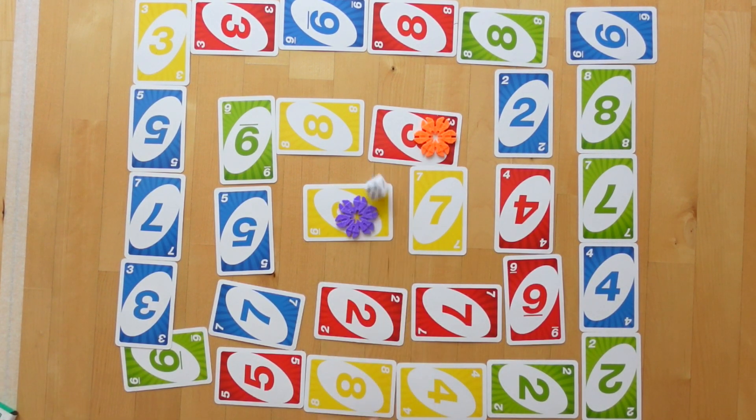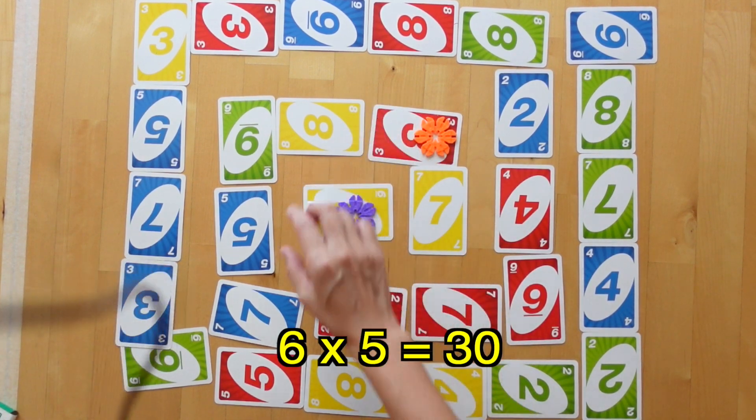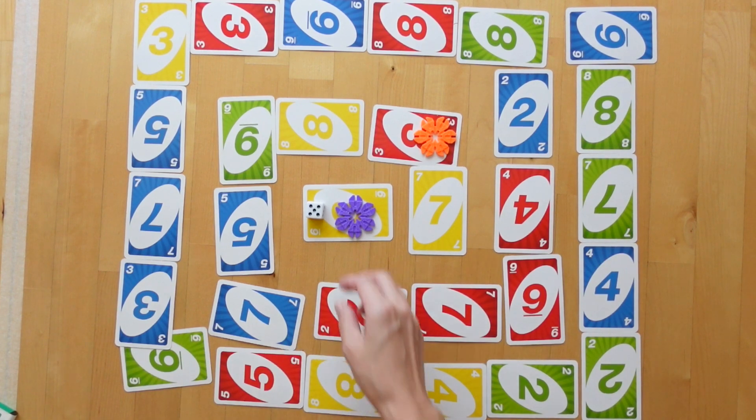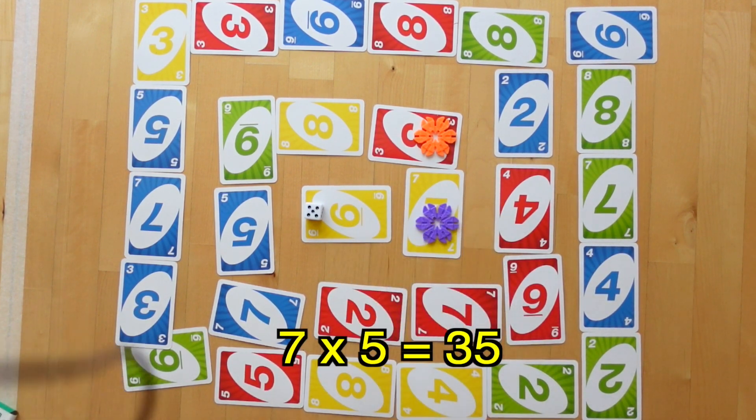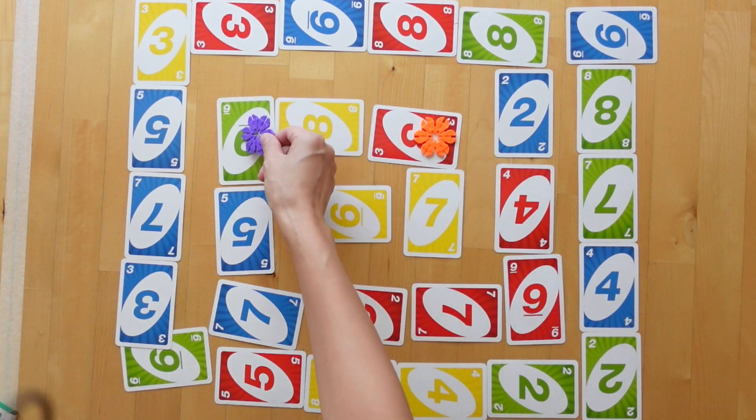Purple player's turn, she rolls a 5. 6 times 5 is 30, in which case she would move 0. Or 7 times 5 is 35, and then she will move 5 spaces, which is what she's going to choose. 1, 2, 3, 4, 5.